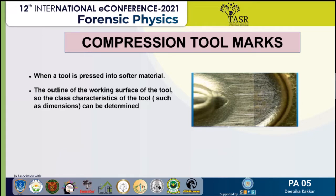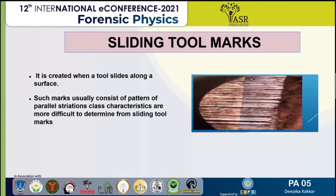Next is the sliding toolmarks. They are created when the tool slides over the surface, and they usually form a pattern of parallel striation. As you can see in the figure, they also have class characteristics, which are more difficult to determine from sliding toolmarks.